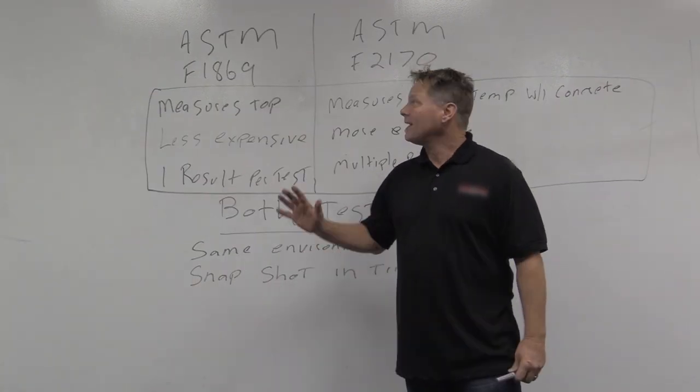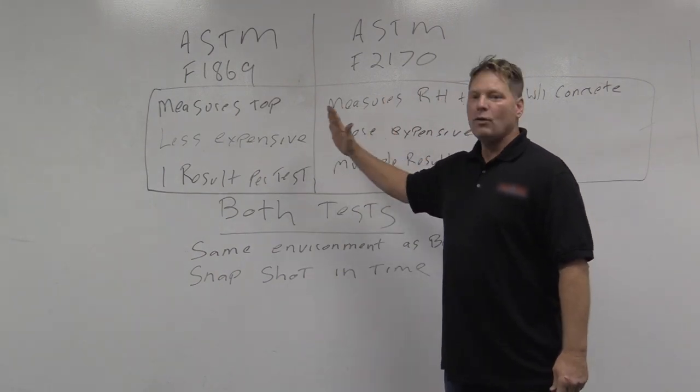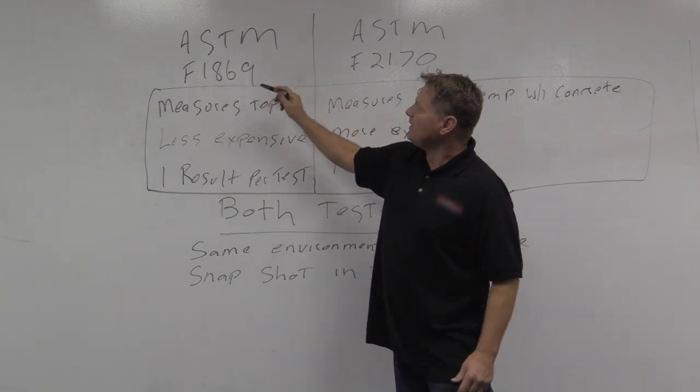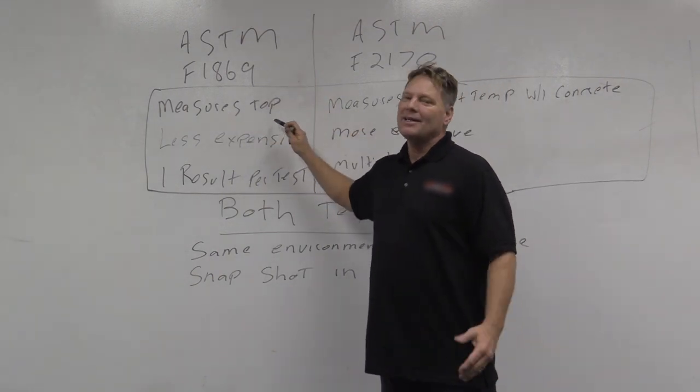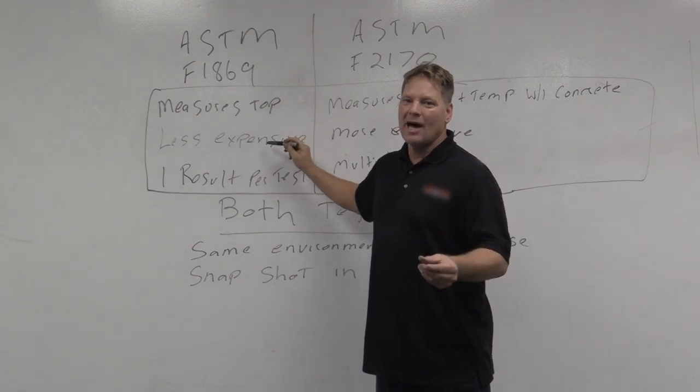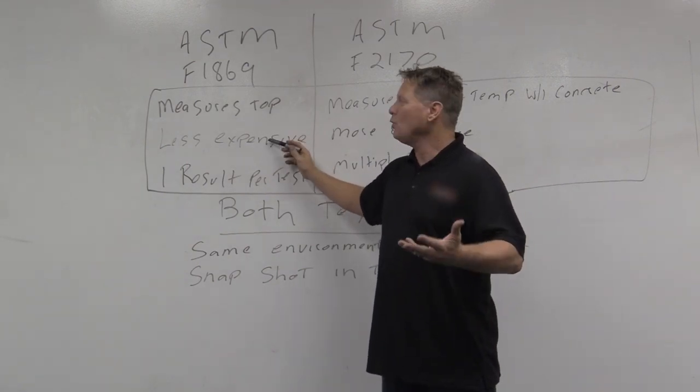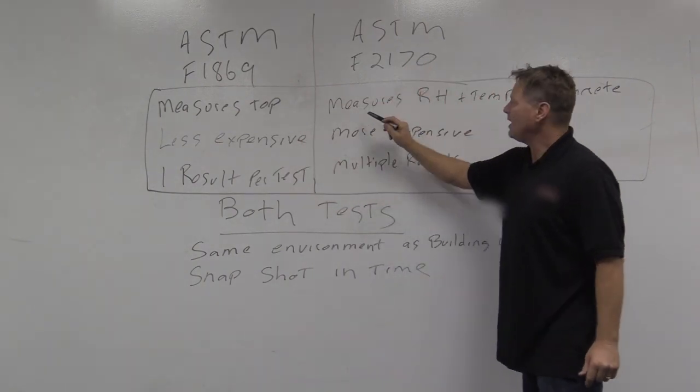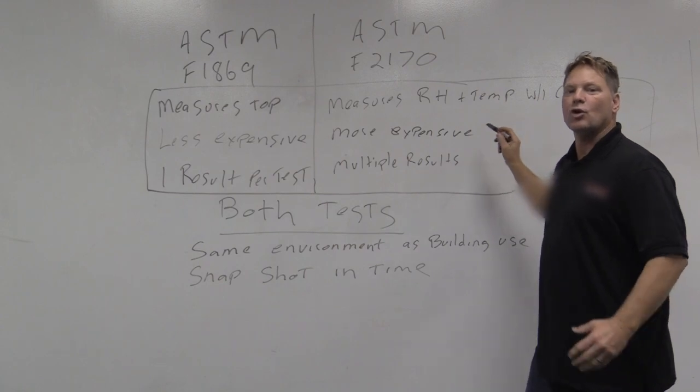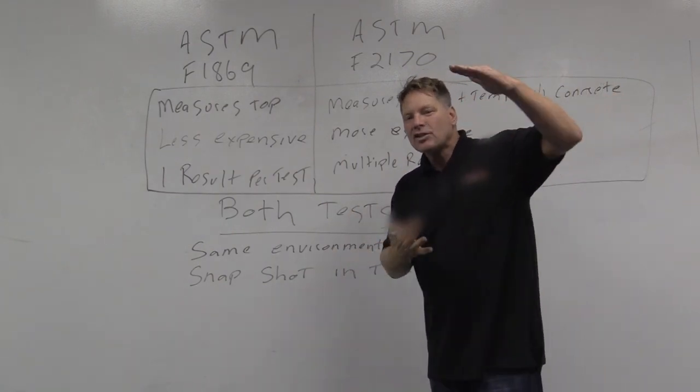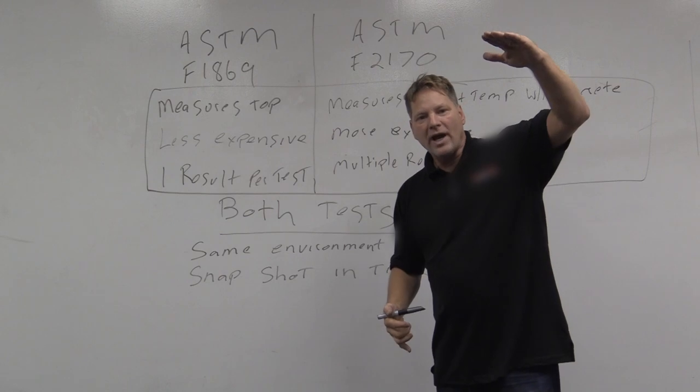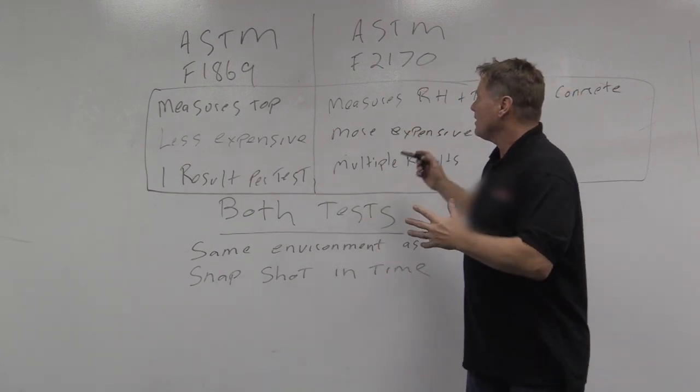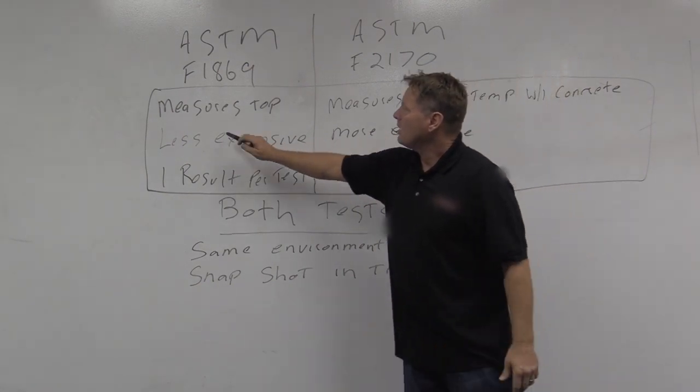Let's close this section out by taking a look at how these differ and where they're the same. ASTM F1869 measures the top—many experts say only the top half inch of the concrete—so it's a view of what's at the top coming out. ASTM F2170 measures the RH and temperature within the concrete, and you can actually vary the depth to get a snapshot of where the concrete is most moist, how the bottom differs from the top, which is a nice feature.